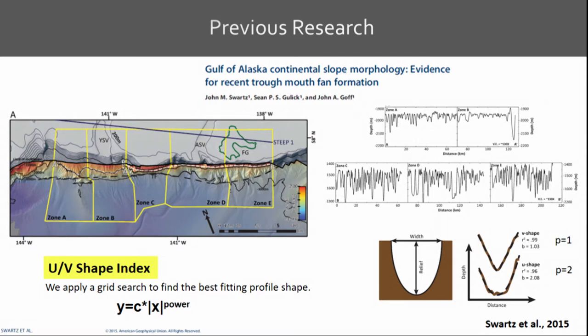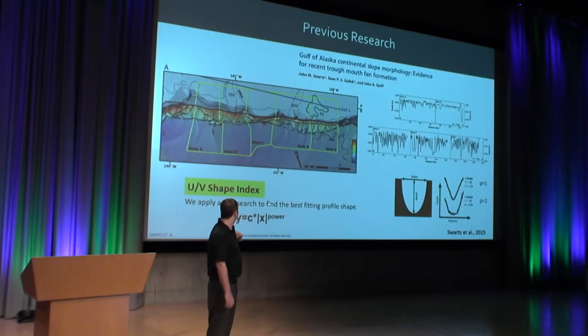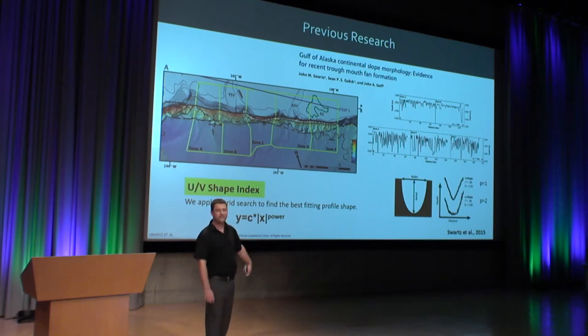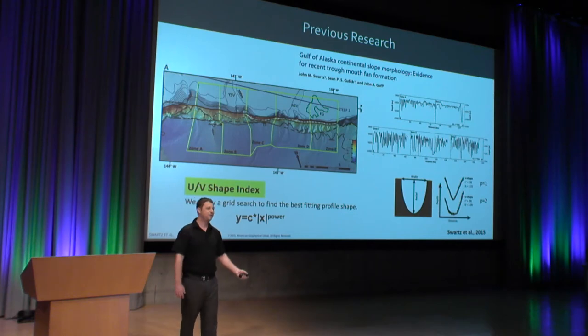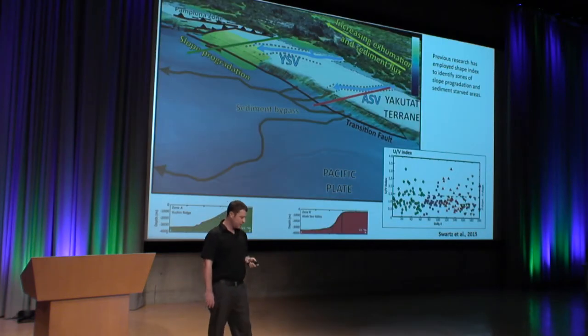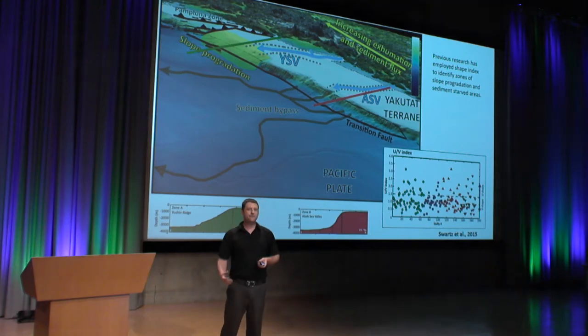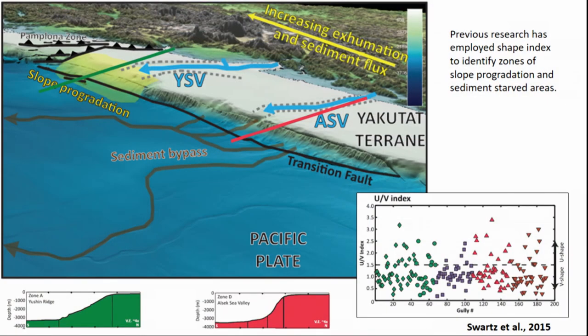Swartz extracted the gullies and ran statistics to measure the best fitting power for the profile shape. If you have a power of one, you're seeing a V shape; if you have a power of two or above, you're looking at more of a U-shaped profile. He also looked at longitudinal profiles and was able to identify a zone of slope progradation as well as areas where we're experiencing sediment bypass on the shelf and slope. This is his distribution of U and V shapes — above this line he's seeing U-shaped profiles, whereas below it, mostly V shapes.